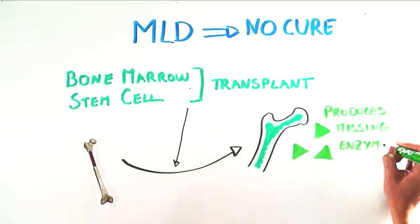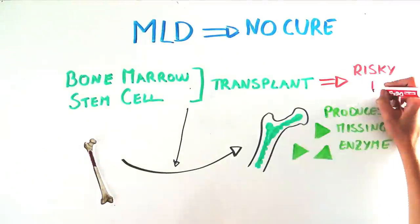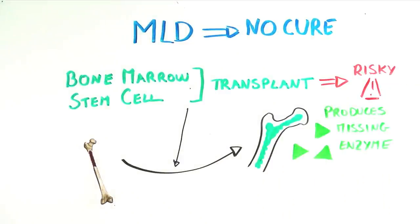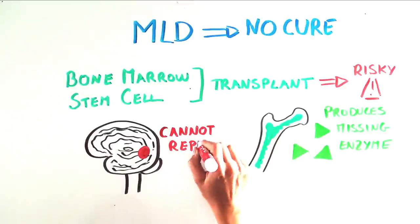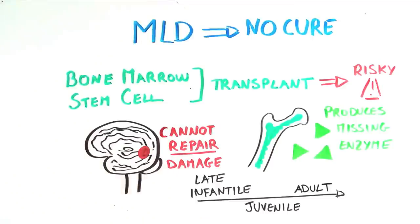Transplant for metabolic disease has improved over the years, but is still extremely risky. Because transplant cannot repair the damage already done to the brain and peripheral nerves, it is not effective for the late infantile form of MLD once symptoms have appeared, because of the rapid progression of this form of the disease.